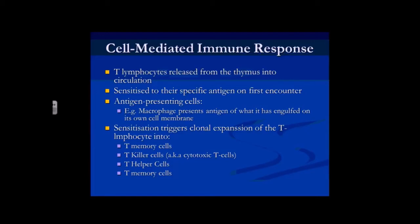Or they can be encountered via something called an antigen-presenting cell. These are macrophages that have spotted something they didn't recognise, gobbled it up through phagocytosis, and then taken whatever antigen was on the outside of what they phagocytosed and displayed it on the outside of their own cell. So the T lymphocytes can come across this macrophage presenting the antigen and be sensitised, even without directly meeting the antigen. The body hasn't had to react to the antigen — the macrophage got rid of it straight away, but then presents it to the lymphocytes for sensitisation so we won't get ill if we come across it again.